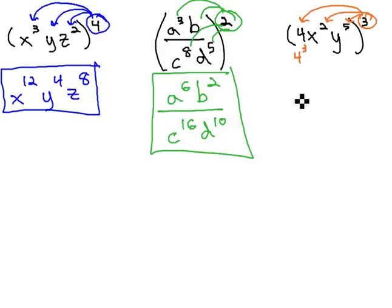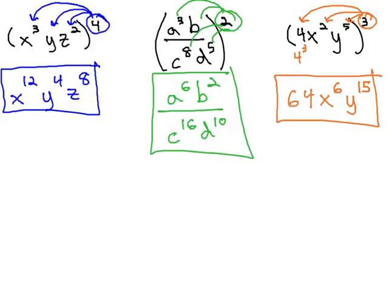Be careful, this does not mean 4 times 3 to get 12. We do, however, multiply exponents together, giving us x to the 2 times 3, or 6, and y to the 5 times 3, or 15, to get our final answer.